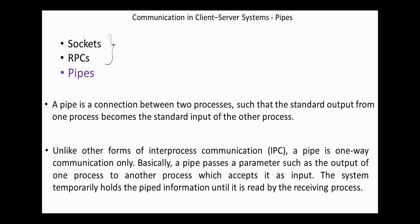A pipe is a connection between two processes such that the standard output from one process becomes the standard input of the other process. Unlike other forms of inter-process communication, a pipe is one-way communication only. Basically, a pipe passes a parameter such as the output of one process to another process, which accepts it as input.